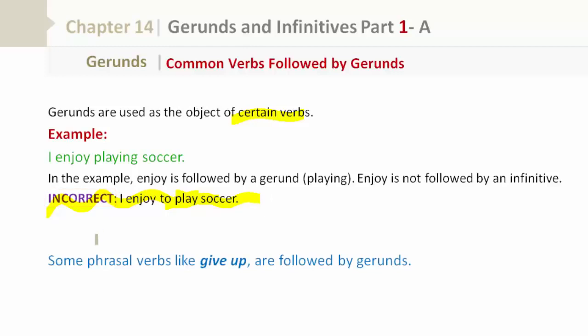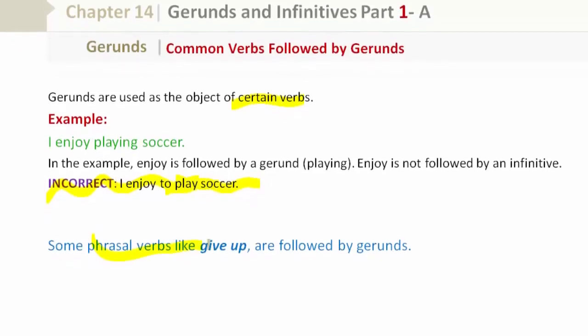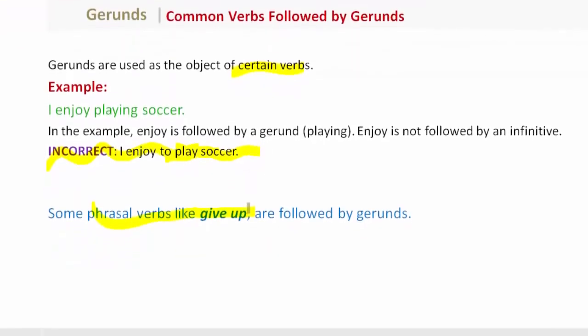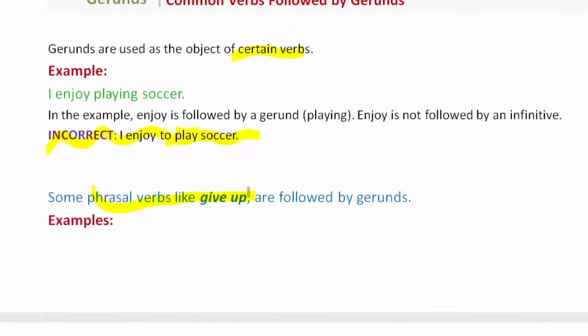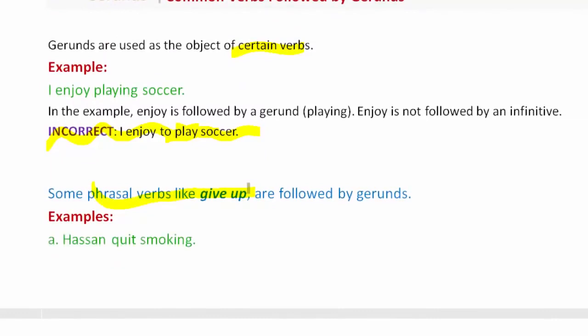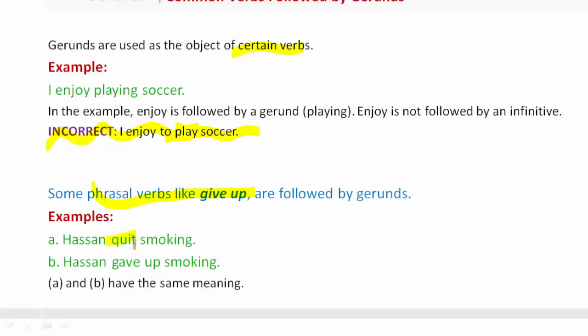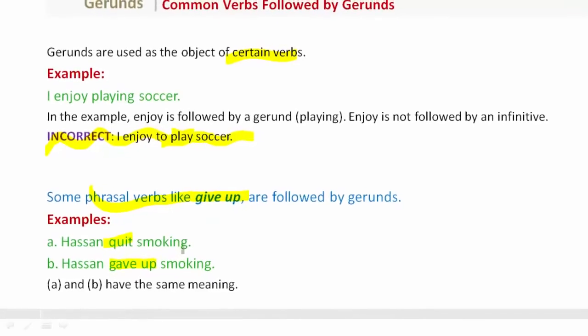Some phrasal verbs like 'give up' are followed by gerunds. For example: 'Hassan quit smoking.' 'Hassan gave up smoking.' Both have the same meaning. The phrasal verbs 'quit' and 'give up' are usually followed by a gerund, which is the -ing form of a verb.